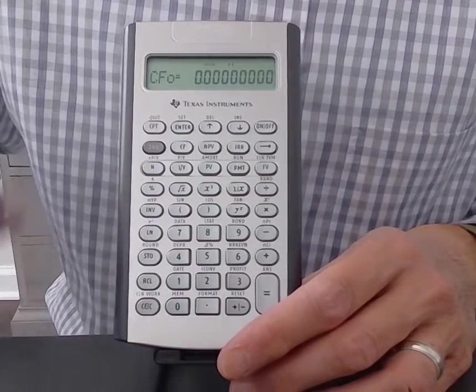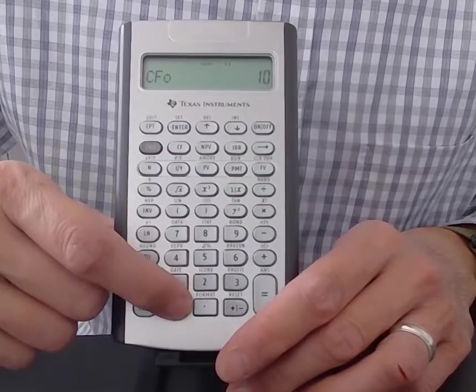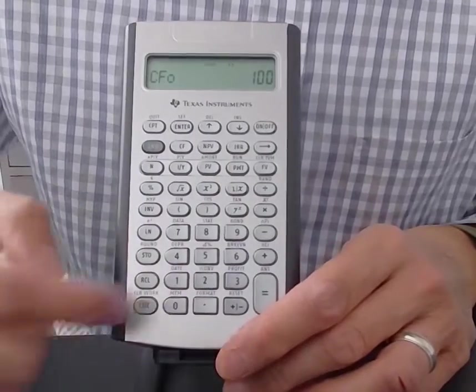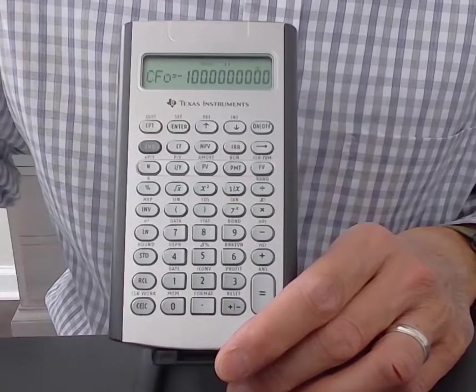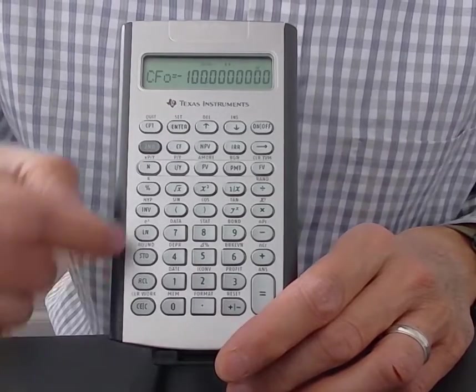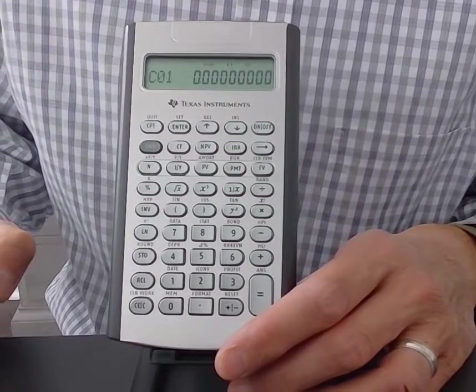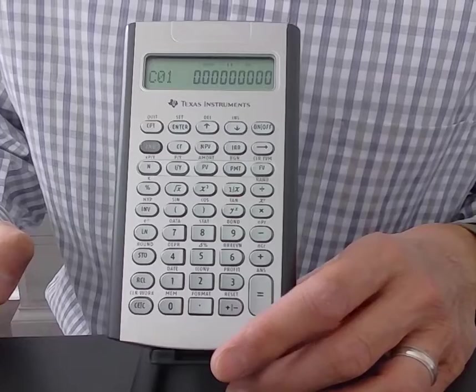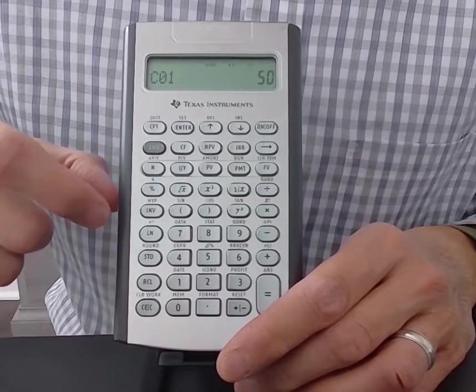Let's suppose that my problem has negative 100 as the first cash flow. So I'm going to put in 100, then the plus minus button, and then enter. So now negative 100 is stored as the cash flow at period zero. Press the down arrow key to go to the next cash flow period. So let's suppose period one cash flow is 50. So I'll put in 50 and enter.